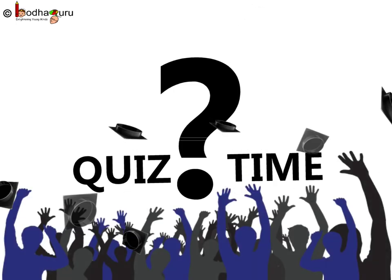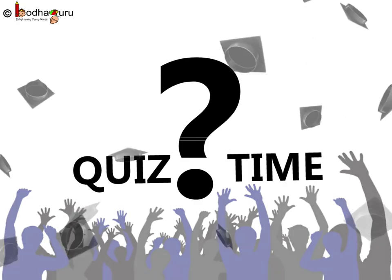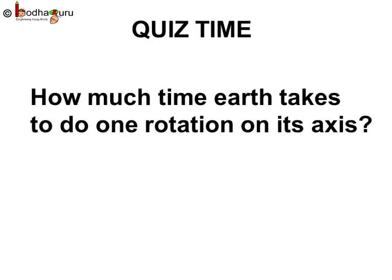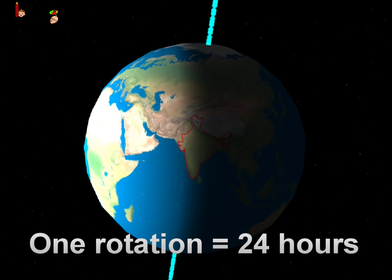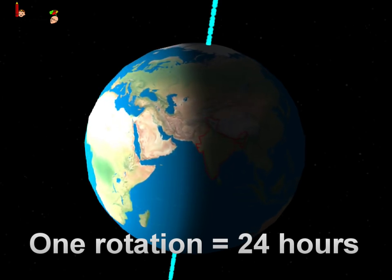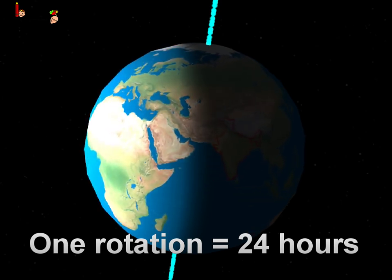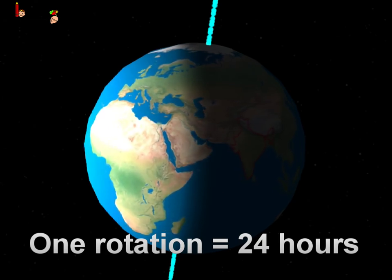So, quiz time! Any guess how much time it takes for Earth to rotate on its axis? Very simple. As I told you, because of rotation, it gives day and night. So, how much is a total day and night? 24 hours! So, it takes 24 hours for Earth to spin on its axis.